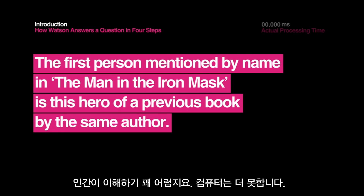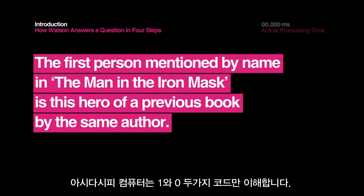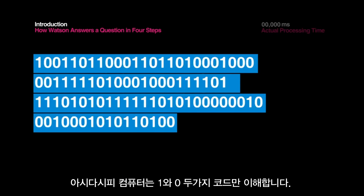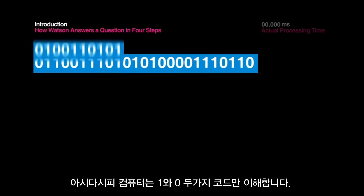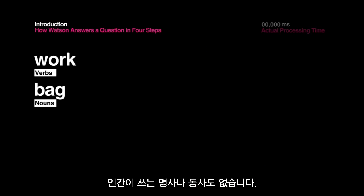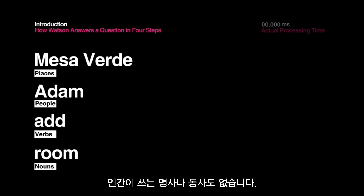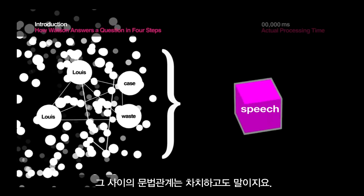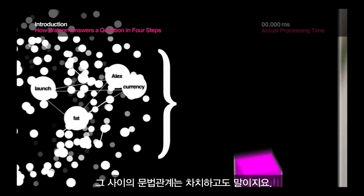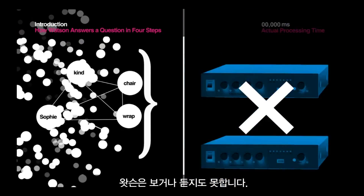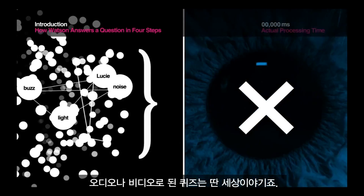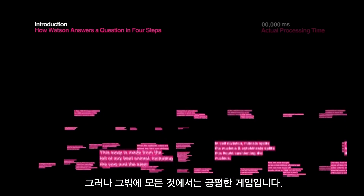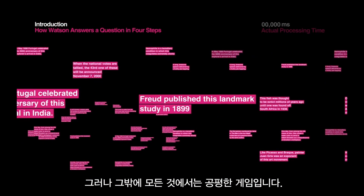Much less a computer. Remember, a computer understands code — ones and zeros — not nouns and verbs or people and places, let alone the relationships between them. Watson can't see or hear, so audio and visual questions are off limits, but everything else is fair game.